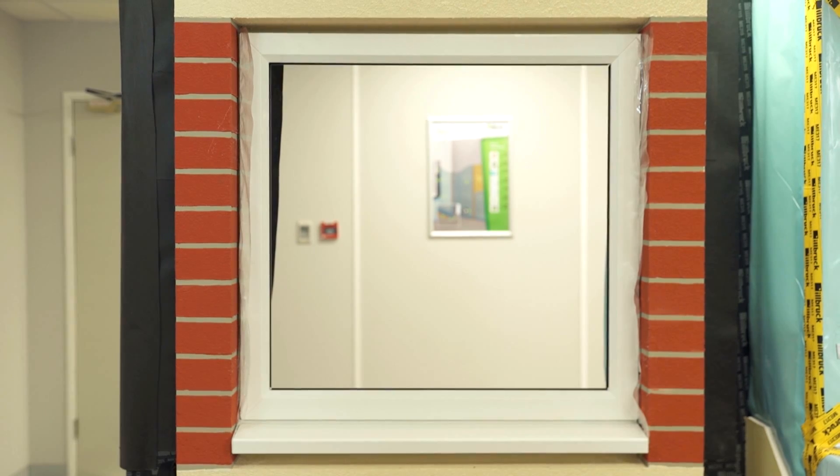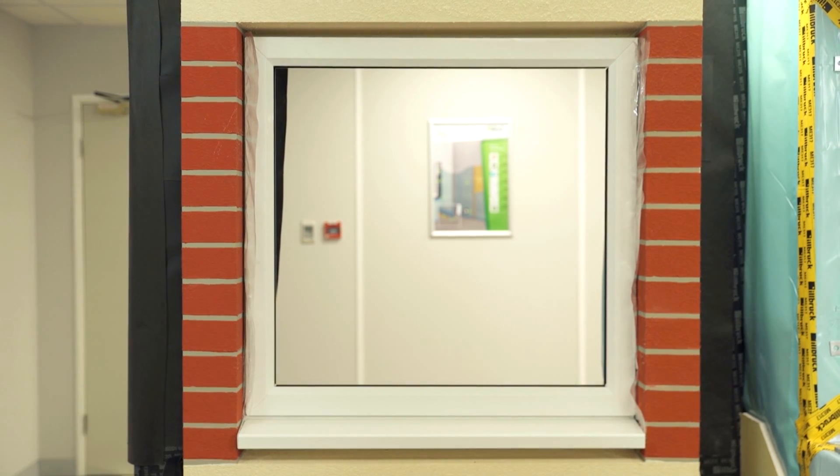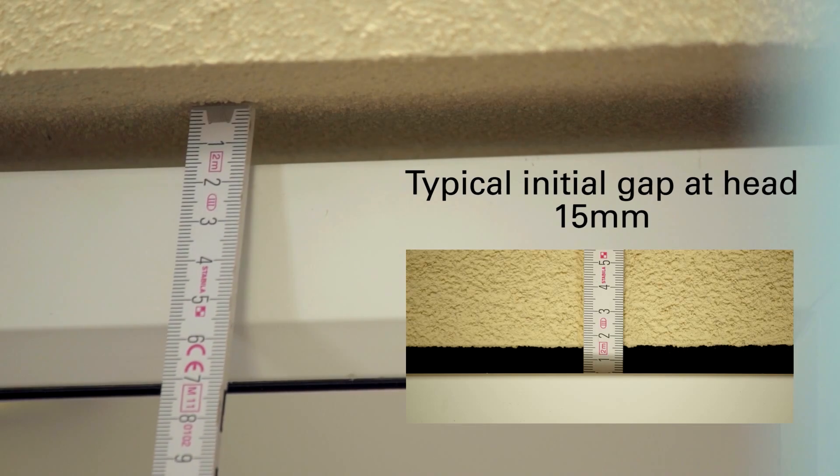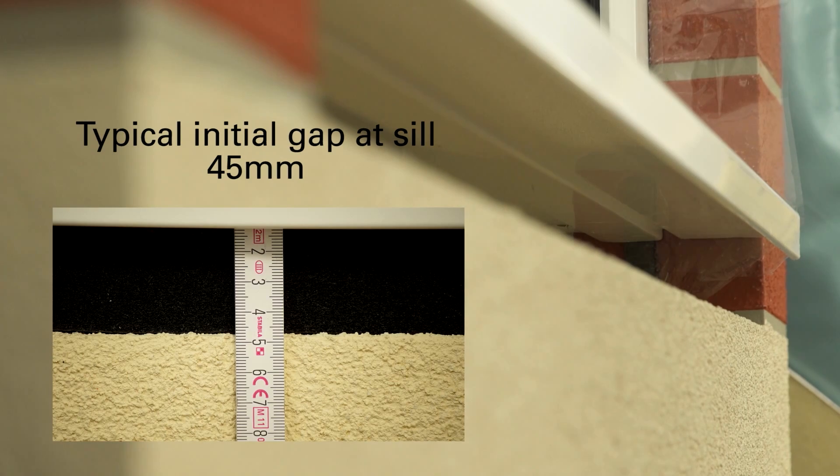The gap required at the head and sill is dependent on the amount of settlement which is calculated by the timber frame designer. At higher levels on the building, a typical gap at the head would be 15 millimetres and at the sill 45 millimetres.